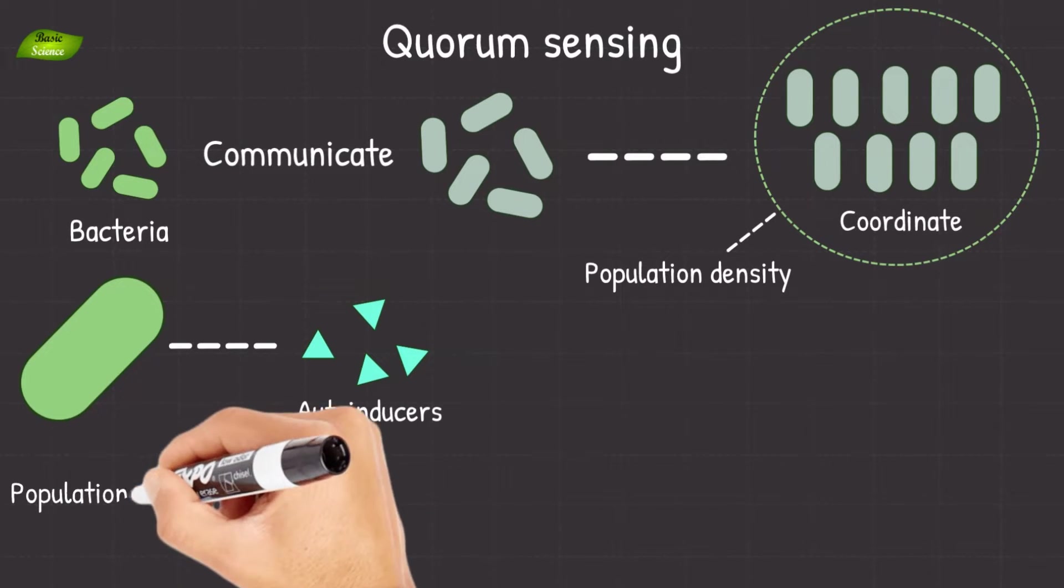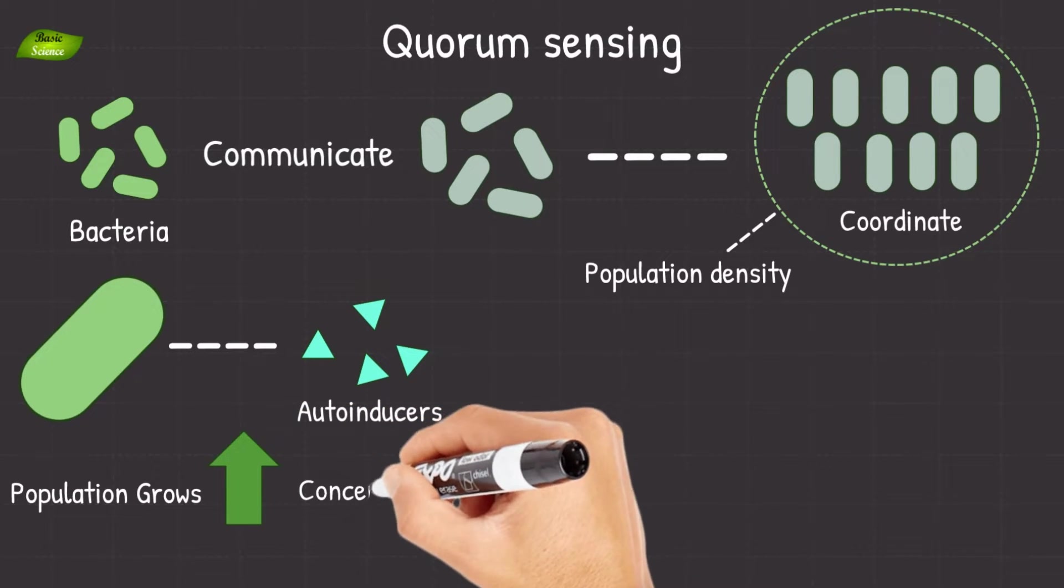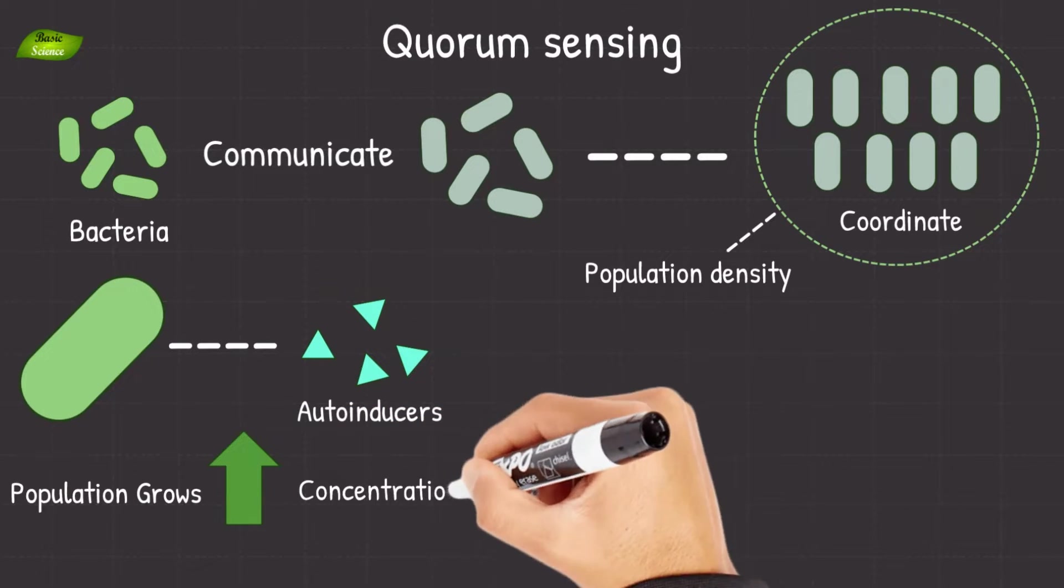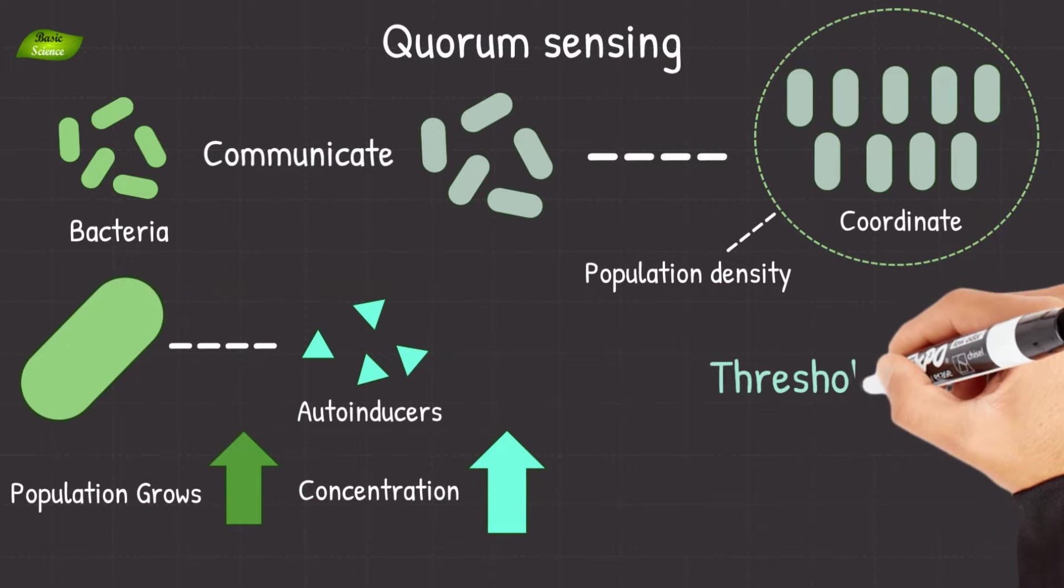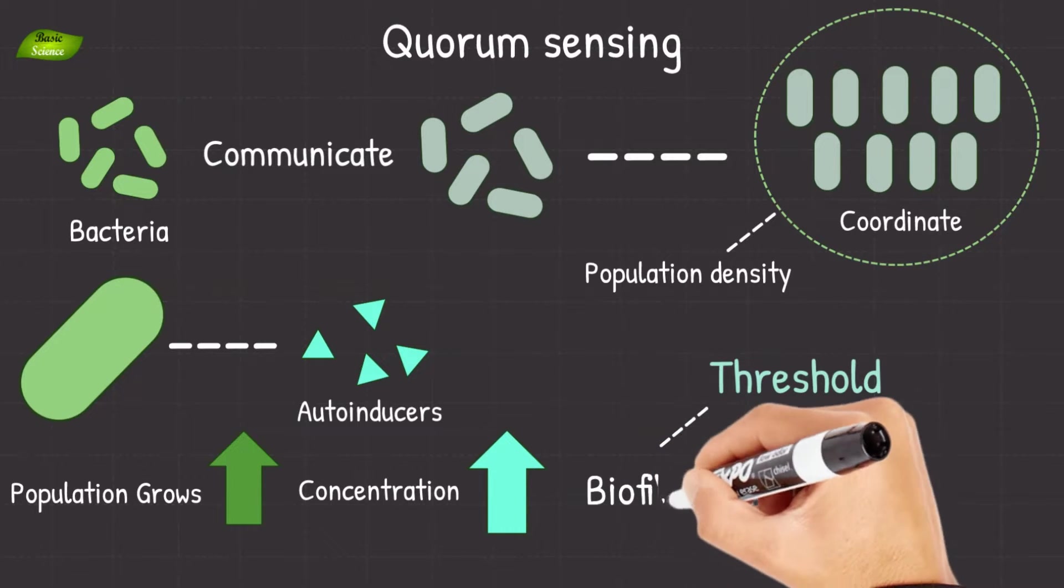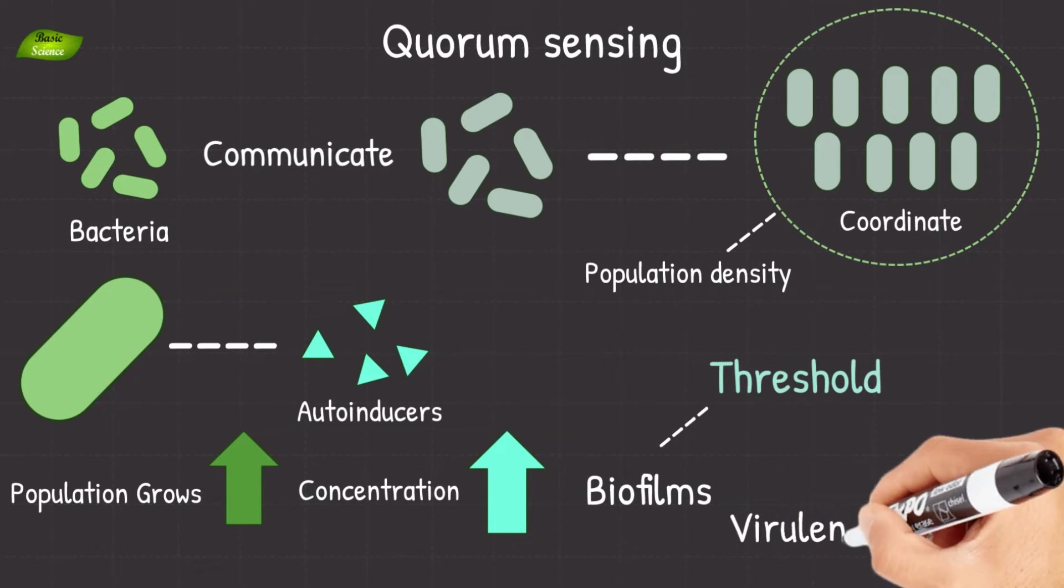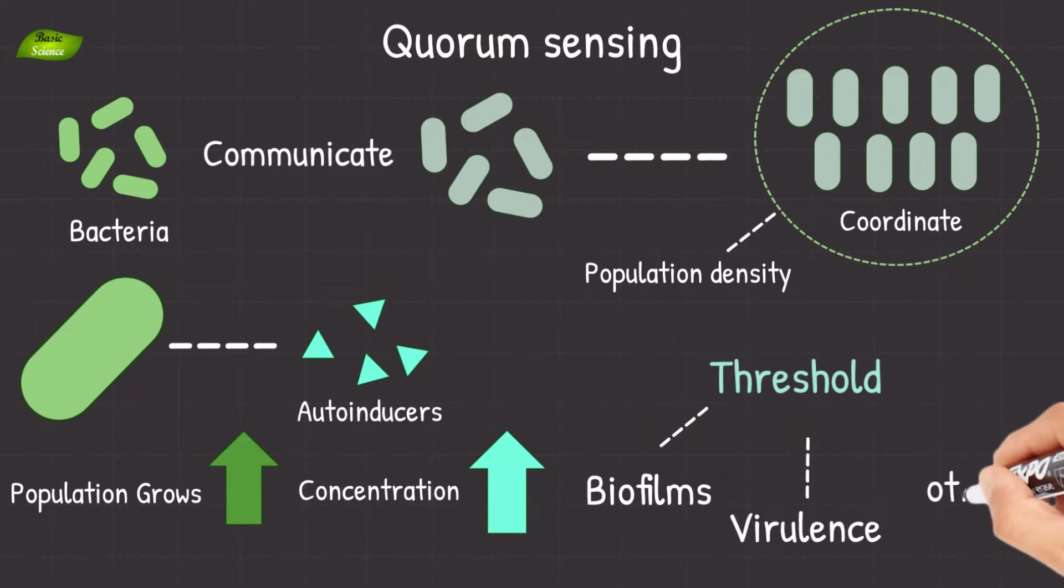As the bacterial population grows, the concentration of these signaling molecules increases. When the concentration reaches a certain threshold, the bacteria can detect it and this triggers a coordinated response or behavior such as the formation of biofilms, virulence factor production, and other collective activities.